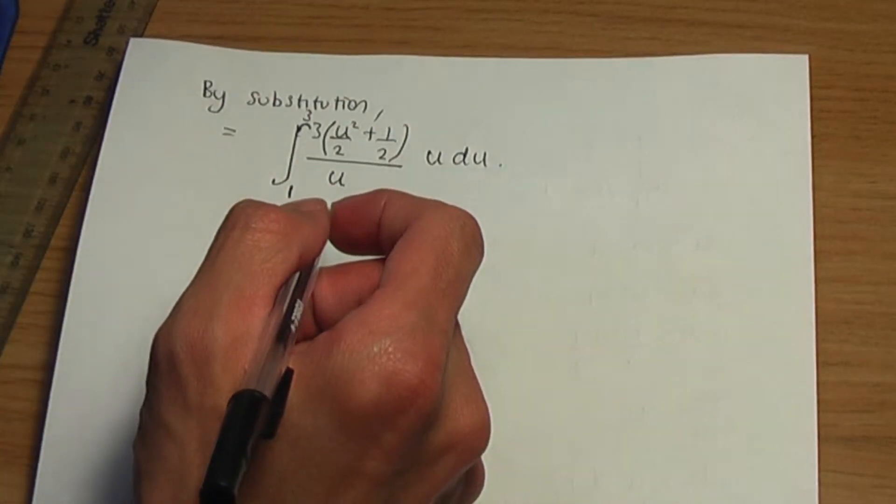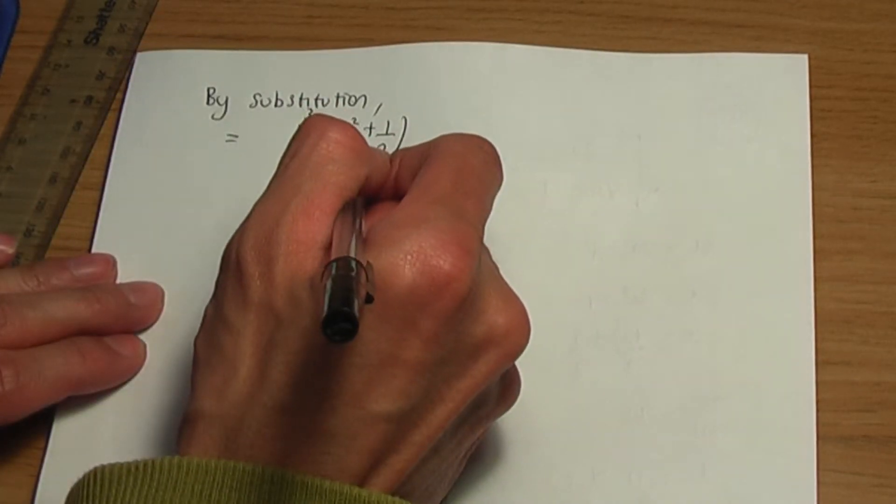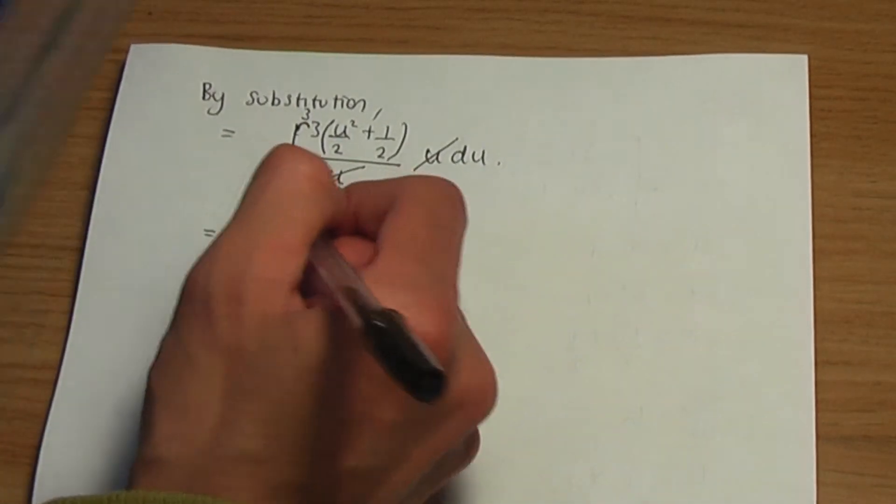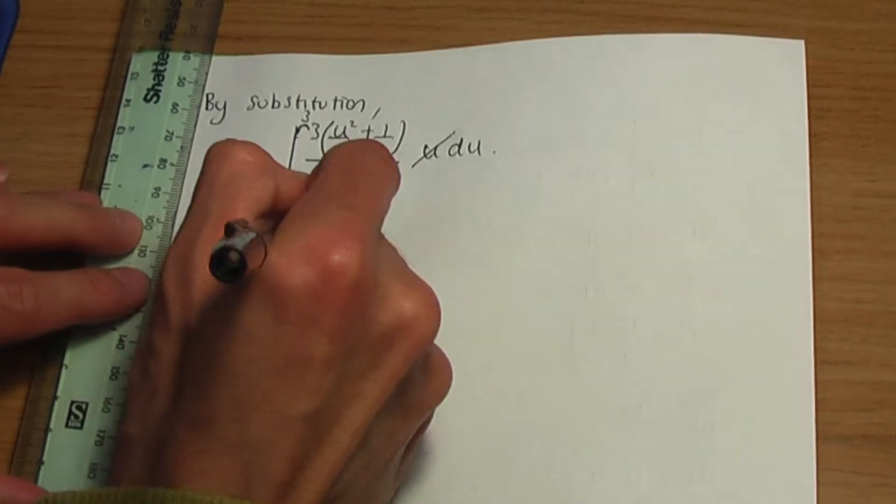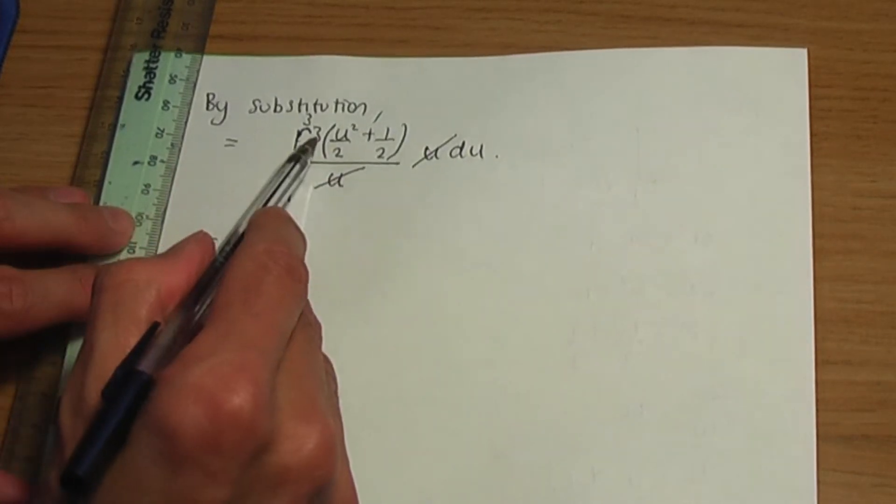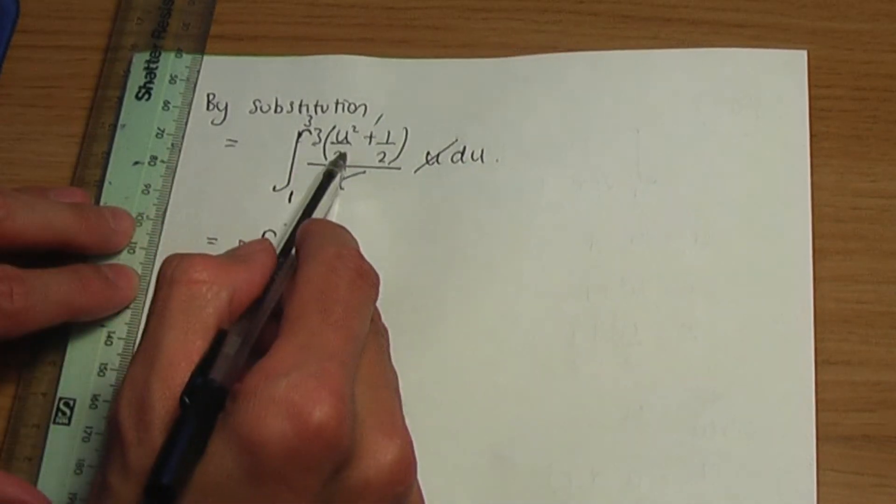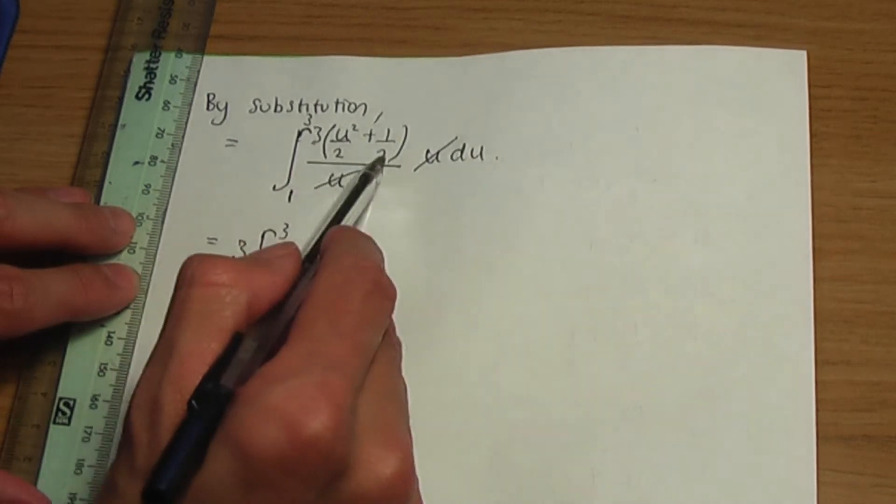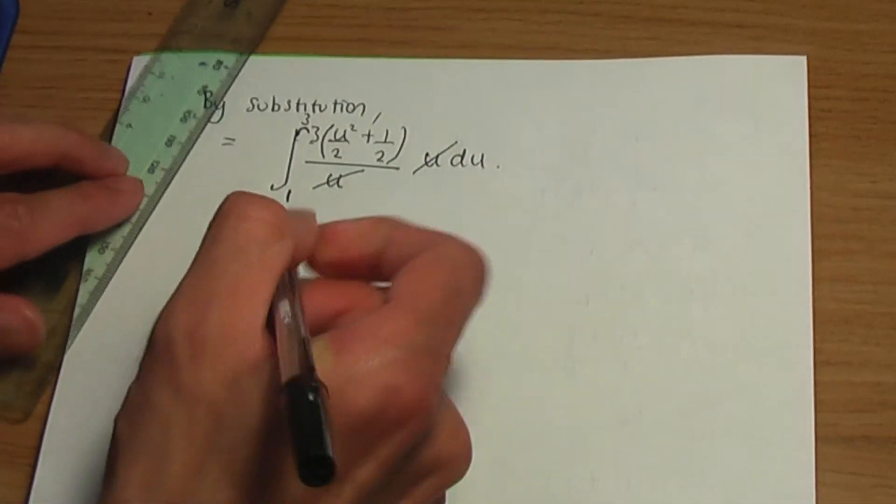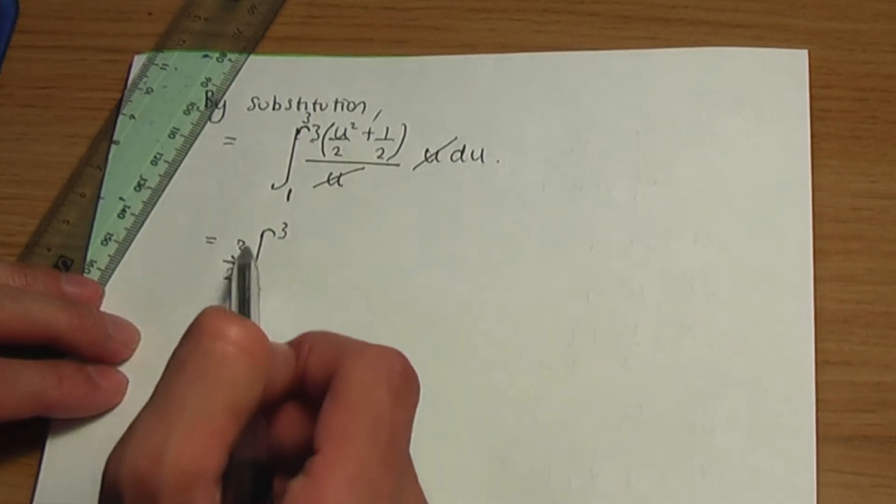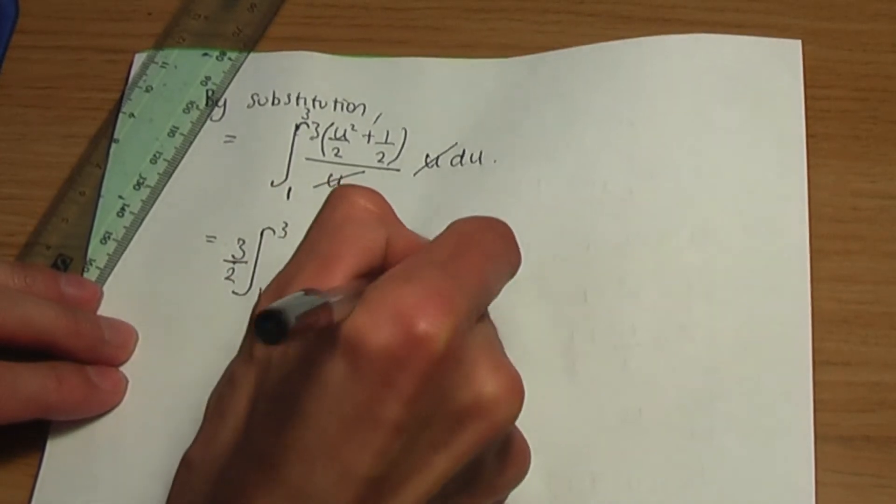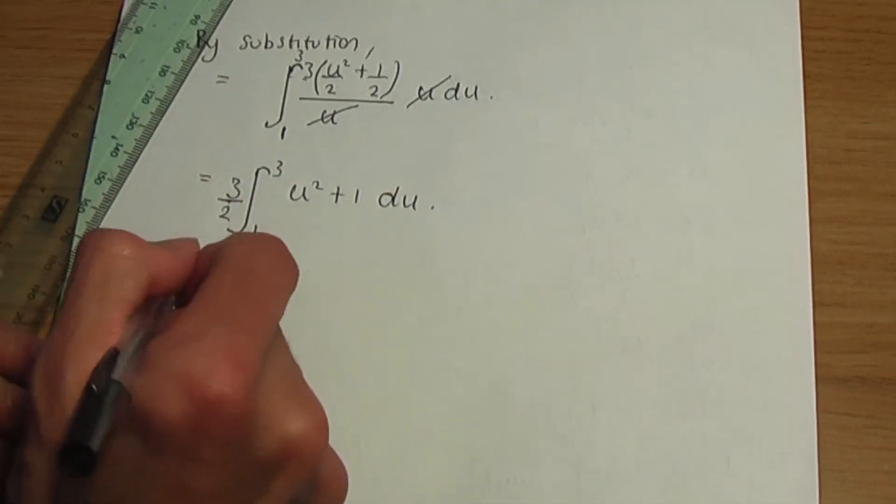With all of this being said, I can simplify, or I can cancel rather, this u with this u. That within my integral, this is what we're going to have. We're going to integrate between 1 and 3. Now, this 3, I'm going to keep outside. 3 is a constant. You can keep constants outside. I'm also going to take a common factor of half. If I take a common factor of half, combined with the 3 will give me 3 over 2. In other words, I'm taking a common factor of 3 over 2 outside my integral, leaving me with u squared plus 1 within the integral. We're going to integrate that with respect to u.